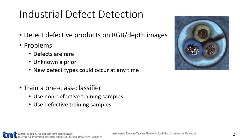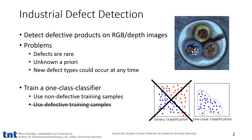First I want to introduce our problem. We want to detect if a product is defective from a RGB or depth image, which is important to ensure product quality and safety standards. Now, if you want to acquire data to train a model on this task, you will meet some problems.